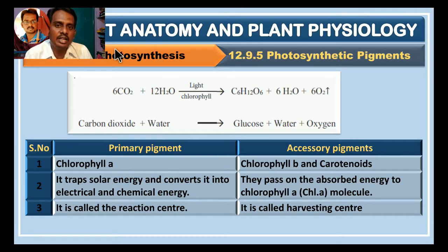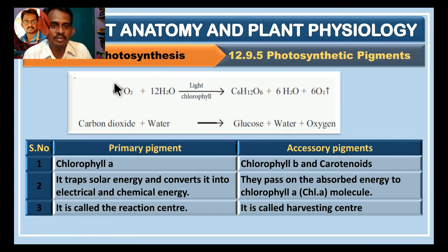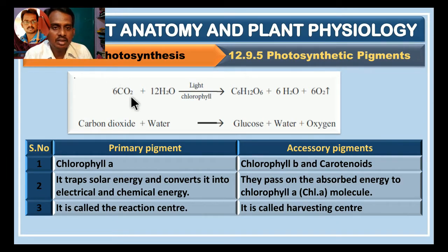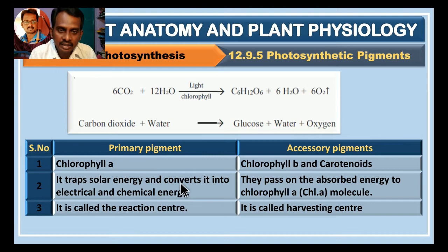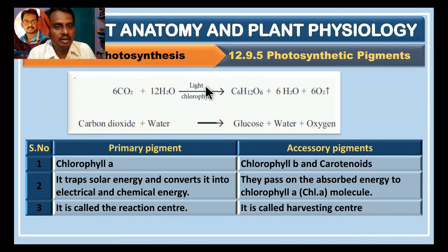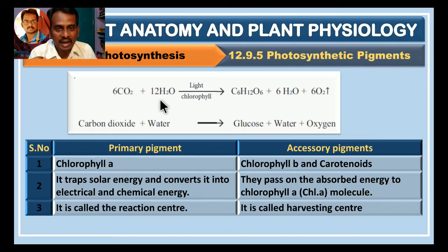These pigments are responsible for the photosynthetic reaction. During the photosynthesis process, carbon dioxide is combined with water molecules — 6 carbon dioxide molecules combined with 12 molecules of water — in the presence of sunlight and chlorophyll pigment.